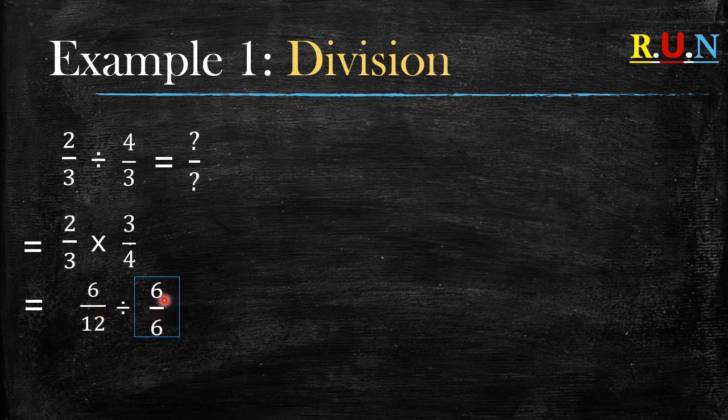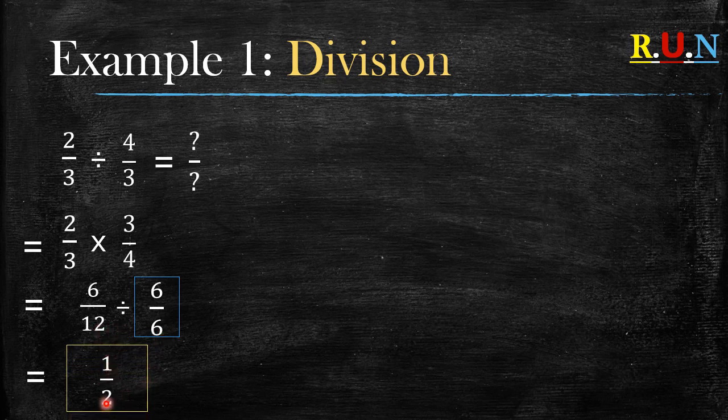6 is the highest common factor of 6 and 12. So what is 6 divided by 6? It gives you 1. What is 12 divided by 6? It gives you 2. So this is your final answer: 1 over 2.